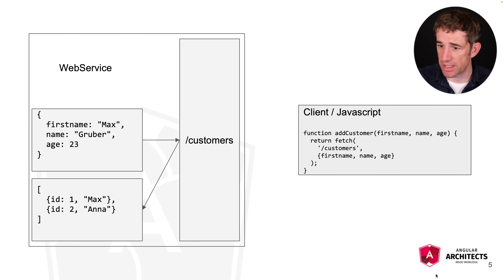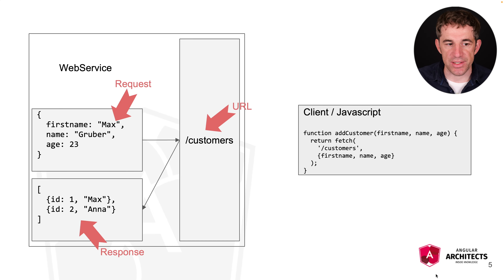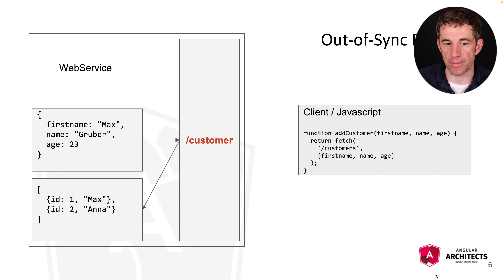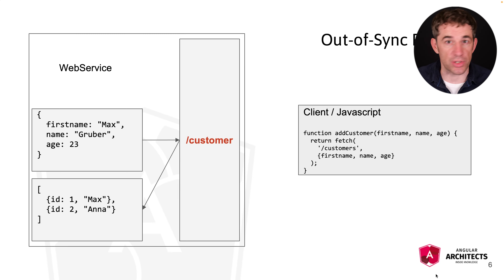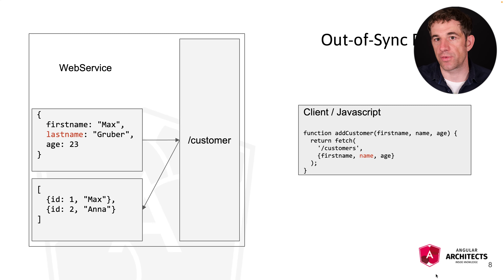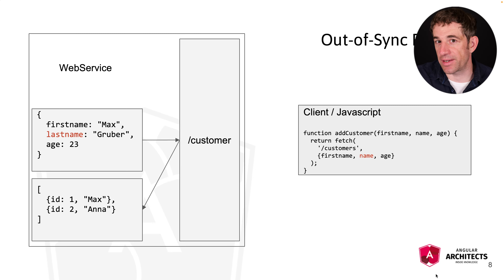Our endpoint has three parts which are critical for the client: the URL, the response type, and the request type. If one of these three changes, we have a problem. For example, if 'customers' changes to 'customer' and our client is not updated, it will fail because it still goes to 'customers' and we get a 404 error. The same is true for request and response types — if 'name' changes to 'last name', we are sending wrong data and get an error.